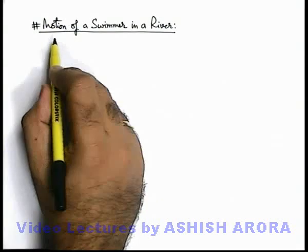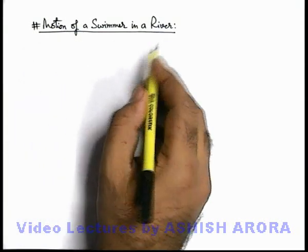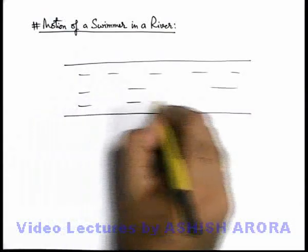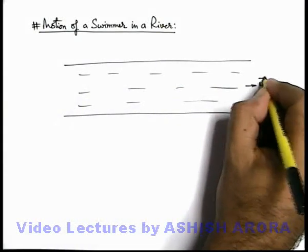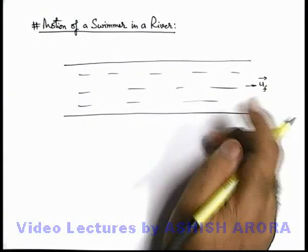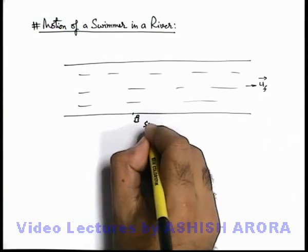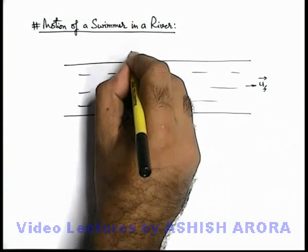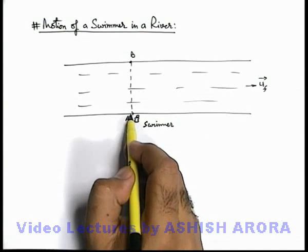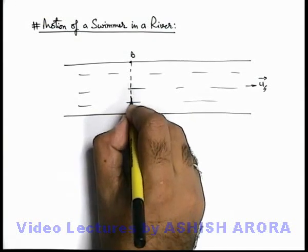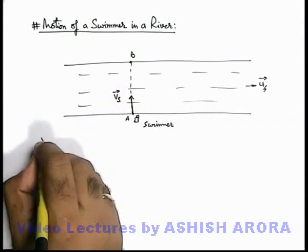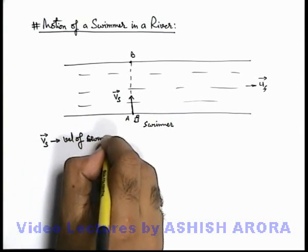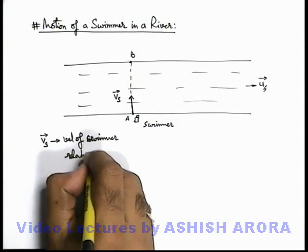Based on similar logic, let's discuss another concept: the motion of a swimmer in a river. Say we have a flowing river where the water is flowing and the velocity of the river current is u_f, flowing from west to east. On one bank of the river at point A, there is a swimmer who wishes to reach point B on the other bank, directly opposite to point A. The swimmer jumps into the river and starts swimming with velocity v_s. This v_s is the velocity of the swimmer relative to water.